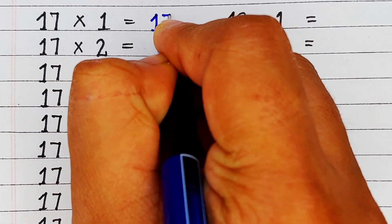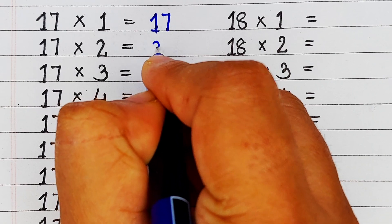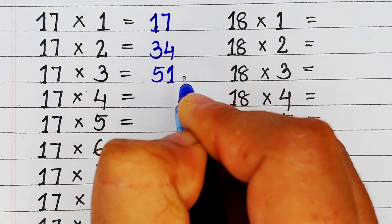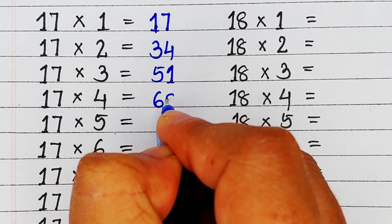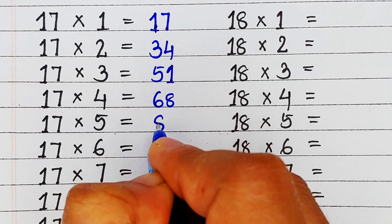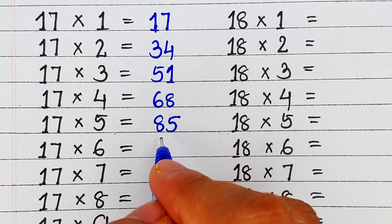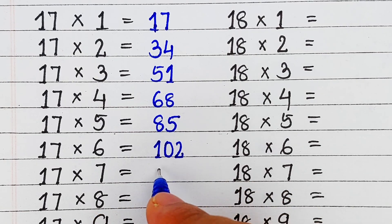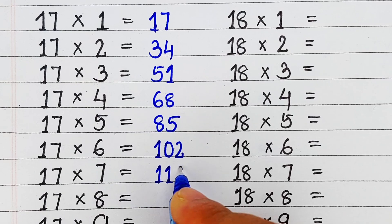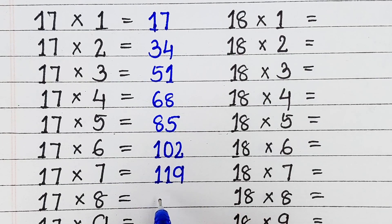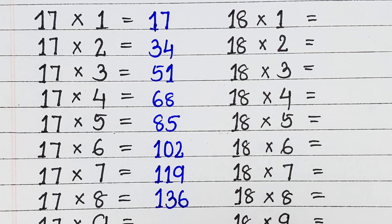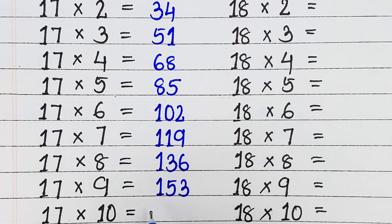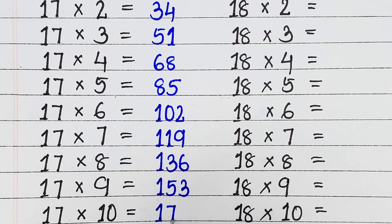Next is table of 17. 17 1s are 17, 17 2s are 34, 17 3s are 51, 17 4s are 68, 17 5s are 85, 17 6s are 102, 17 7s are 119, 17 8s are 136, 17 9s are 153, 17 10s are 170.